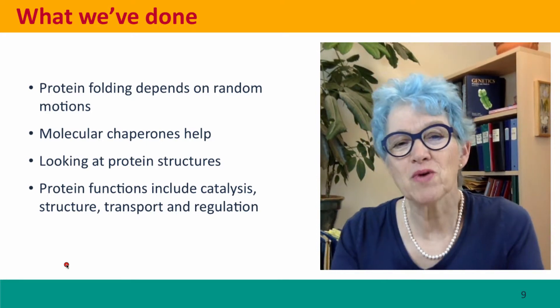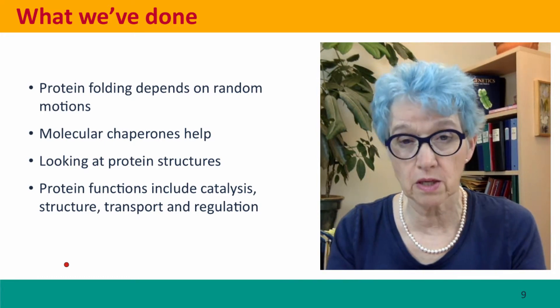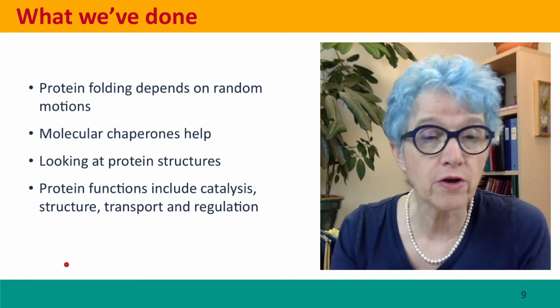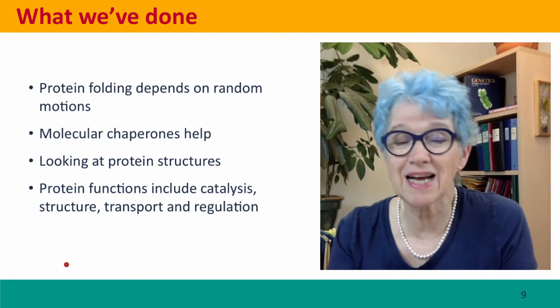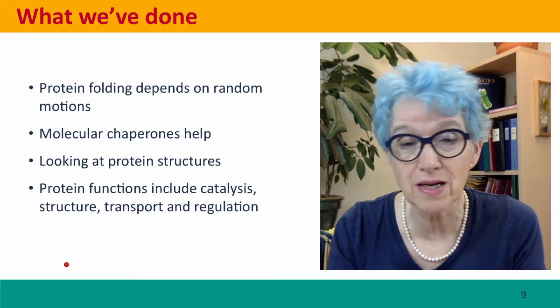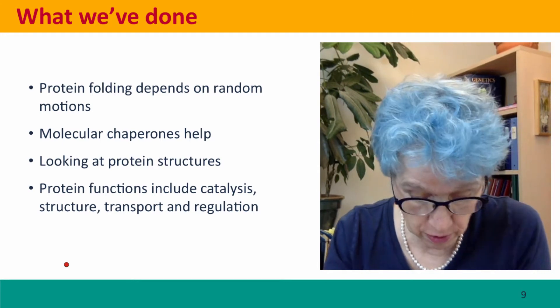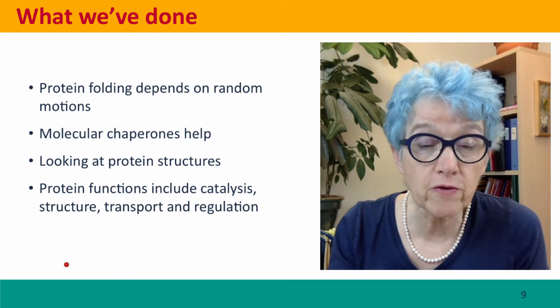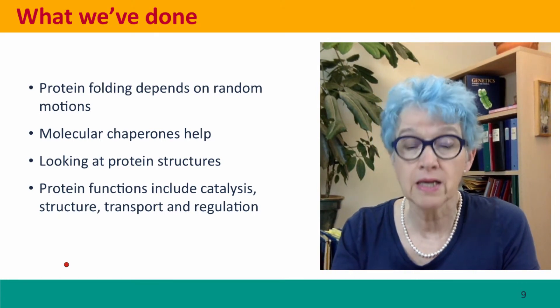Now what we've done, we talked about how protein folding depends on random motions of the protein, bringing together parts of the protein chain that can form stable interactions. This folding is assisted by special proteins called molecular chaperones that help make sure that the right interactions form, so the protein folds in the right way. We looked at some protein structures, different levels of protein structure, and we talked briefly about the different kinds of protein functions, which we're going to talk about in detail in the next lectures.